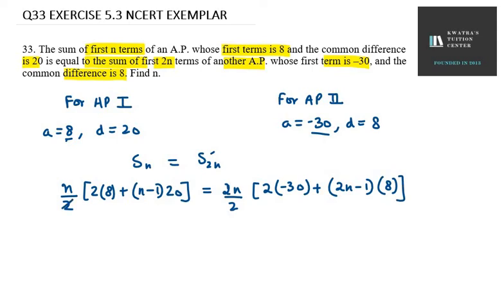Now, 2 and 2 cancel, n and n cancel, you have got 16 plus 20n minus 20. This is on the left hand side. Now on the right hand side, 2 times minus 30 is minus 60.